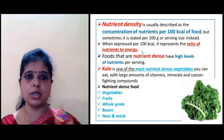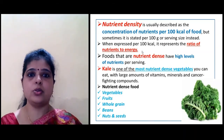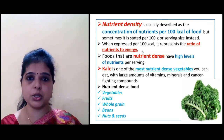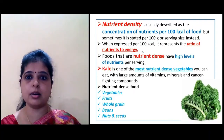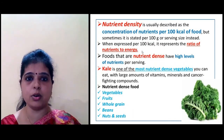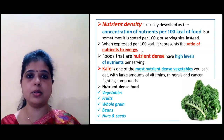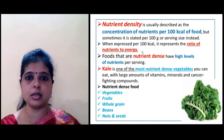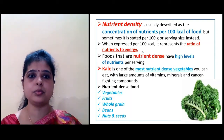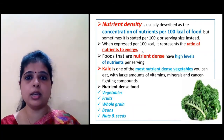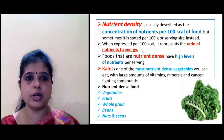The next term is nutrient density. Nutrient density is described as a concentration of nutrients per 100 kilocalories of food. It can also be defined as the amount of nutrients present in 100 grams of food or serving size. When expressed per 100 kilocalories, it represents the ratio of nutrients to energy.